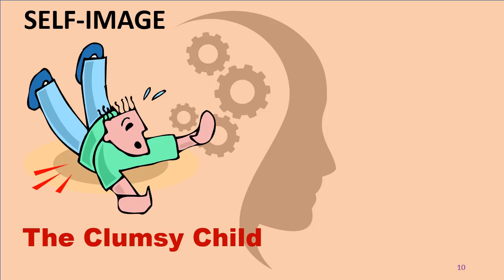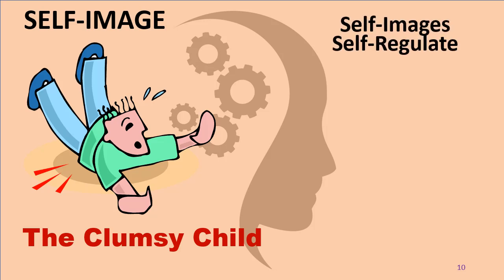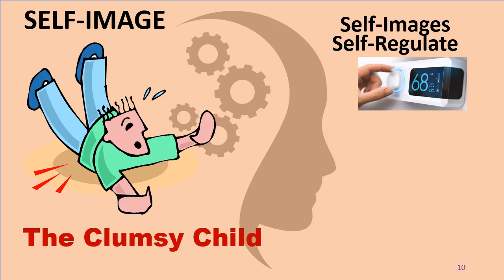Now, the thing to keep in mind about self-images is that they self-regulate — they're like a thermostat. You have a thermostat set at 68. If it goes up to 74, the air conditioner comes on. If it goes down to 64, the heat comes on. You've got this range, and it self-regulates.